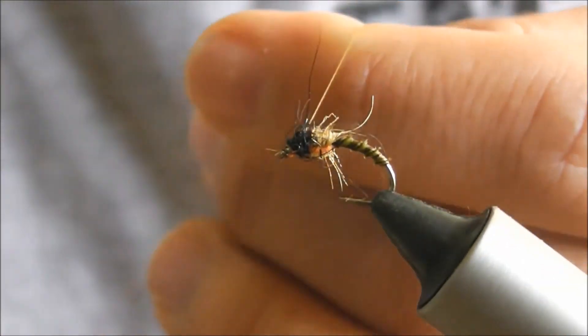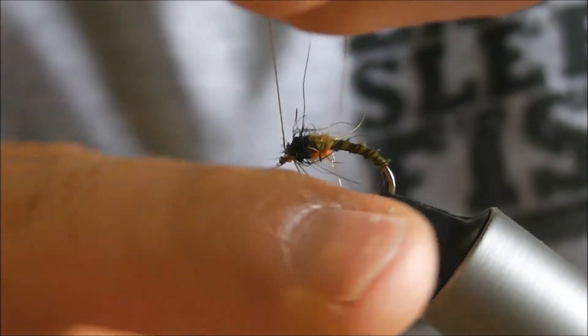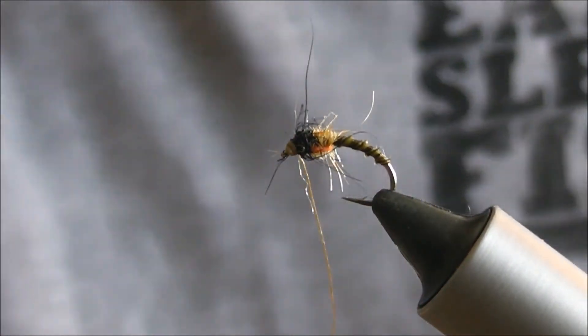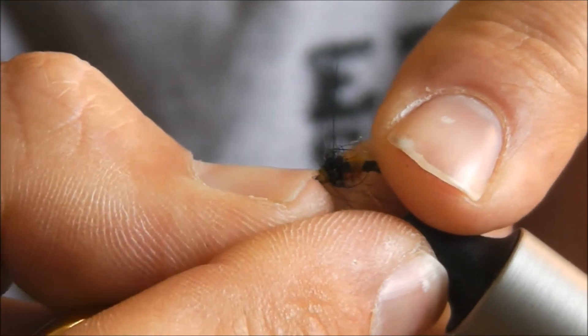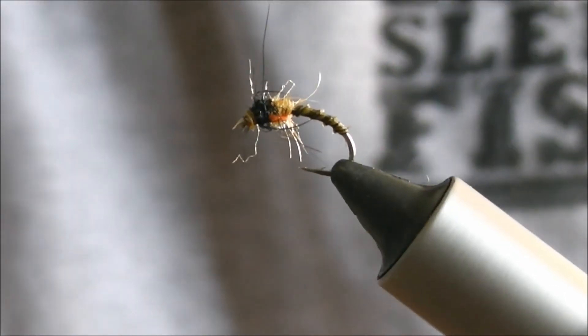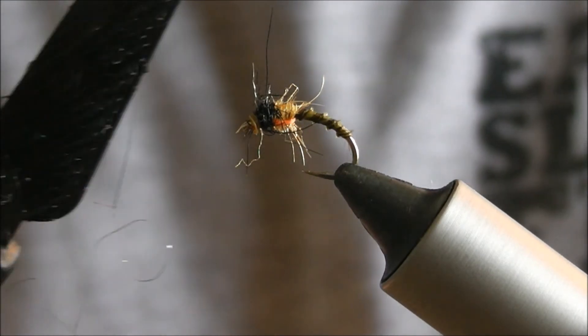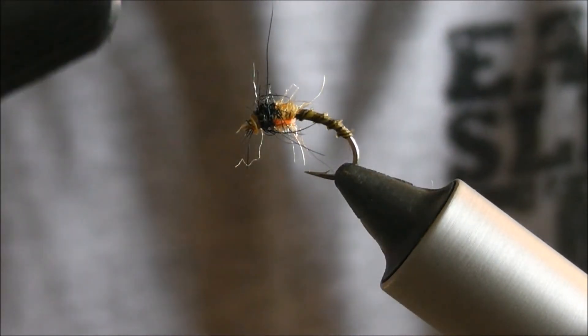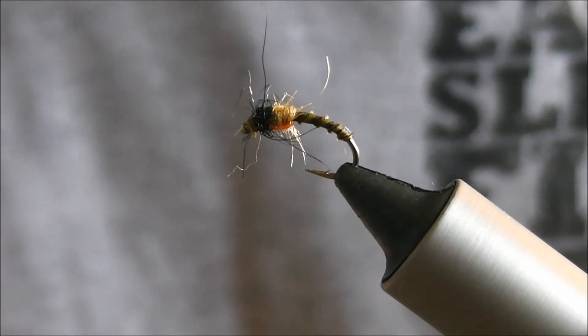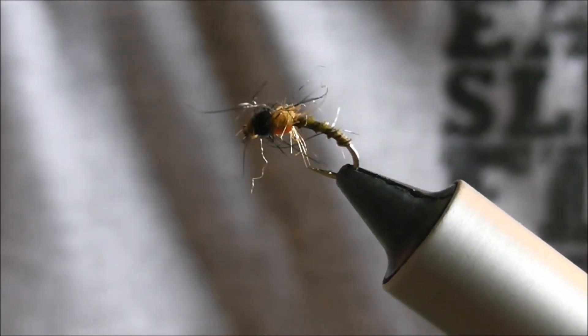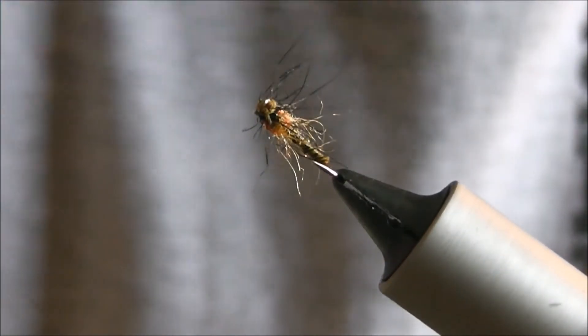And then go over the top. Hold that back, clear the eye. There we are. Now quick finish, turn that off. The most important part, this little thing. So it's a velcro brush made by a company called Stonfo Italy. You can use velcro on a lollipop stick, you can use the cuff of your wading jacket if it's got velcro on it.